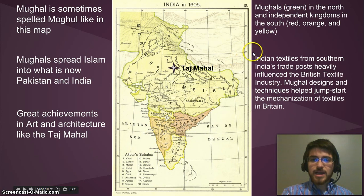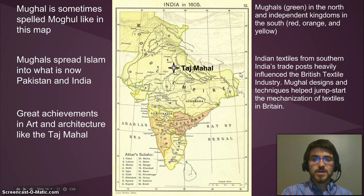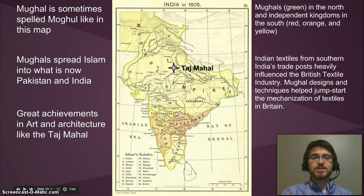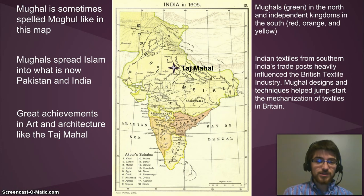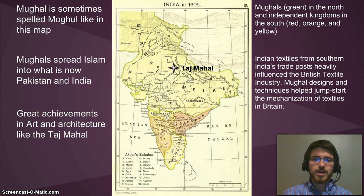The Indian textiles from southern India's trade posts heavily influenced the British textile industry, because Mughal designs and those southern Indian designs helped jumpstart the mechanization of textiles in Britain — meaning it helped get Britain to the place where it could use machines to make textiles like cloth and cotton. And then they were able to jumpstart the Industrial Revolution, which we're not even going to talk about for a couple of months, but it's going to be really cool when we get there.